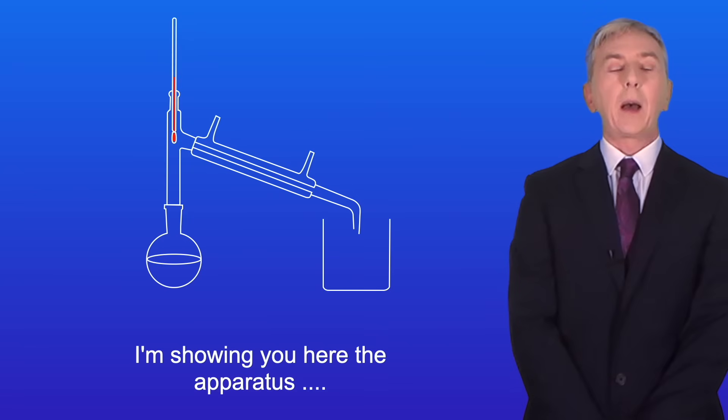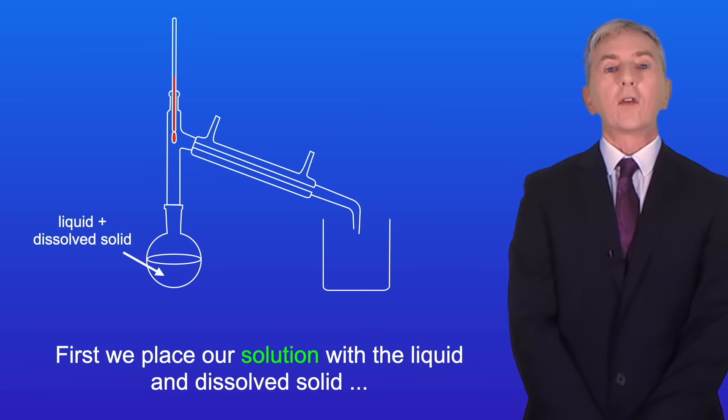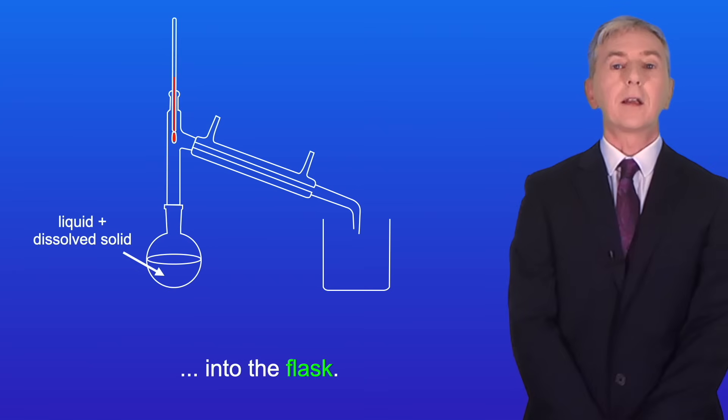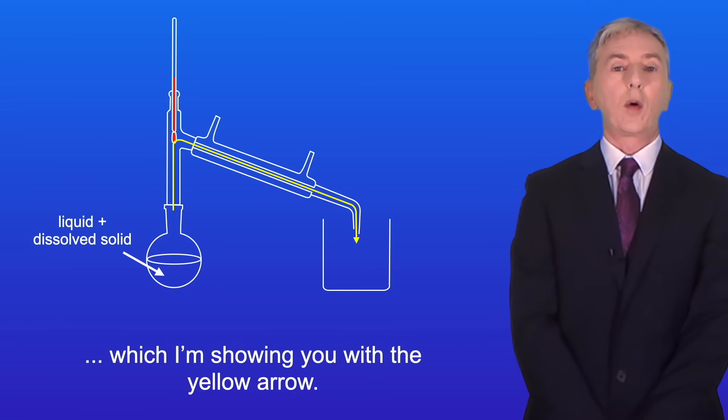I'm showing you here the apparatus that we use to carry out simple distillation. First we place our solution with the liquid and dissolved solid into the flask. The flask is connected to a continuous glass tube, which I'm showing you with the yellow arrow.